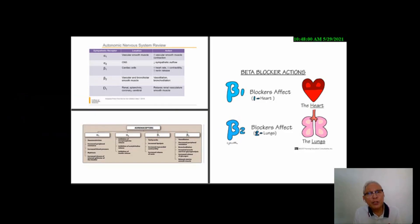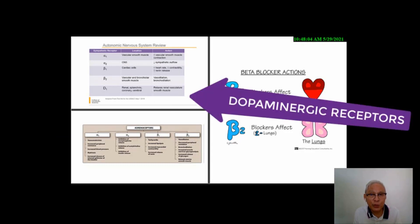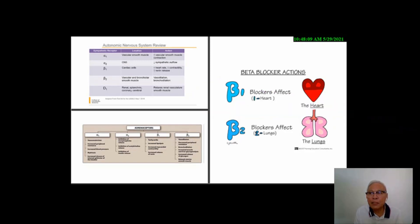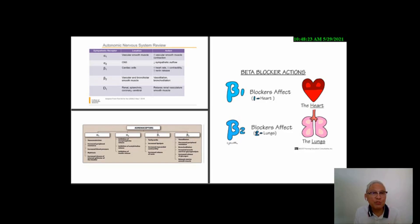Another type of receptor is the D1 or dopaminergic receptor. These receptors are abundant in renal, splanchnic, coronary, and cerebral cells. Their main action is to relax renal vasculature smooth muscle, resulting in an increase in urinary output.